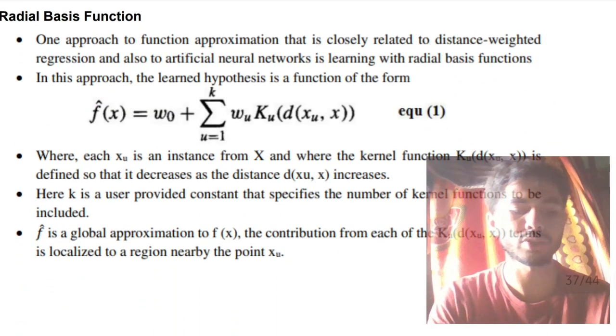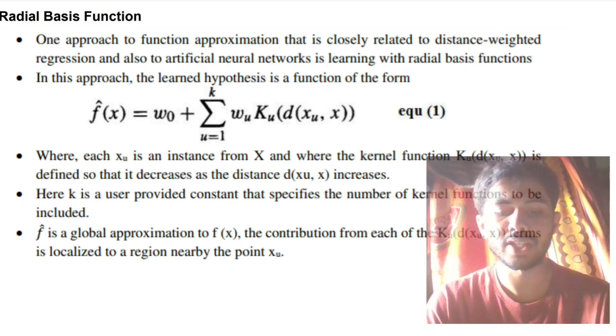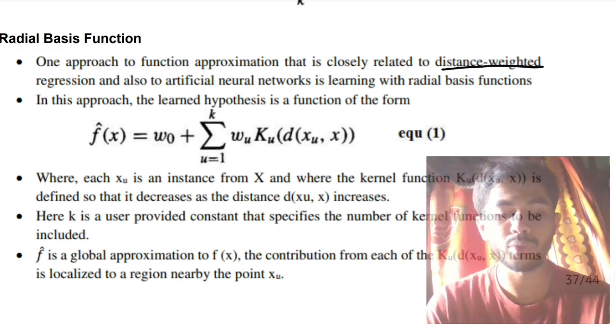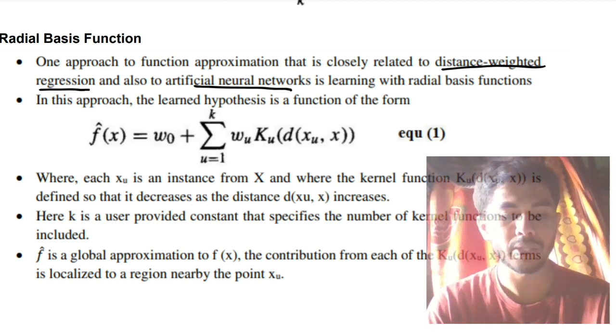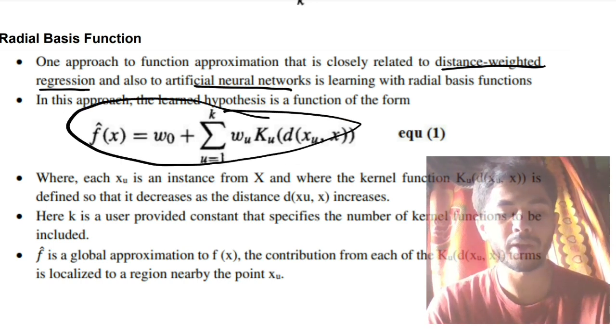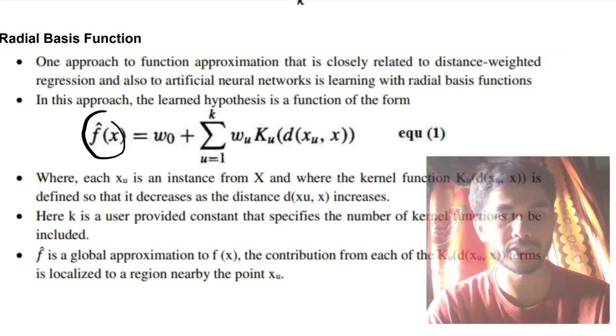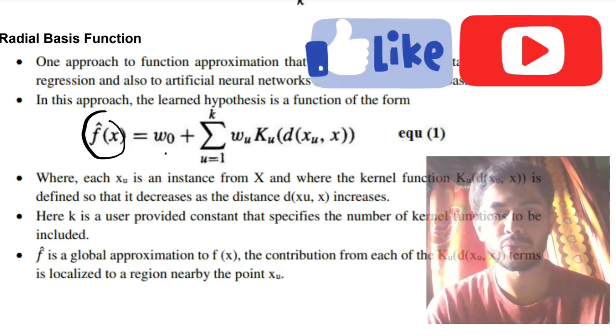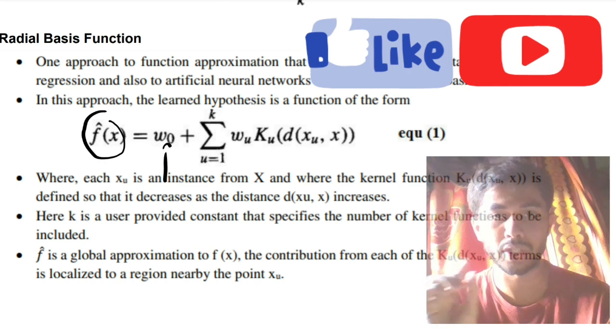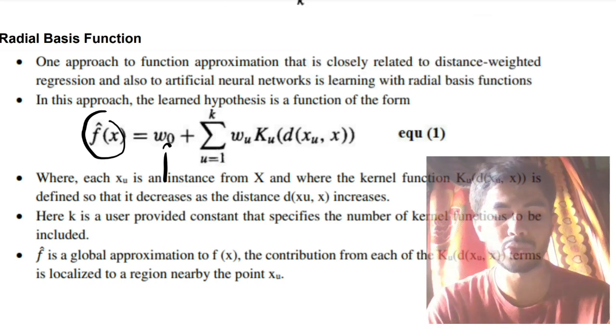Let's move on to the second super important question, which is Radial Basis Function. The first point you have to write is that it is a mixture of distance-weighted regression and artificial neural network. Second point you need to write is it uses this formula: f'(x) is the global approximation of x, and we'll be using w0, w1*x1, w2*x2. Instead of x1, x2, x3, you'll be using ku(d(xu, x)) - the distance of xu with respect to x and kernel function ku for it.